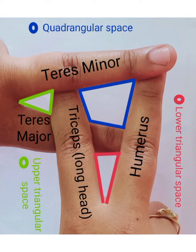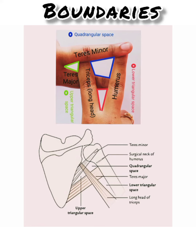Now let us look at the boundaries of quadrangular space. The superior border is formed by the teres minor and the inferior border is formed by the teres major, whereas the medial border is formed by the long head of triceps and the lateral border is formed by the surgical neck of humerus.